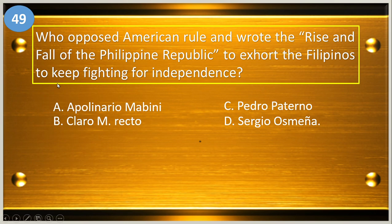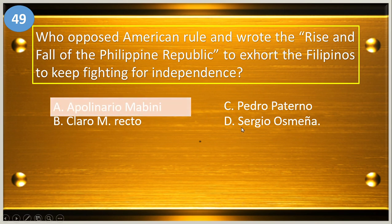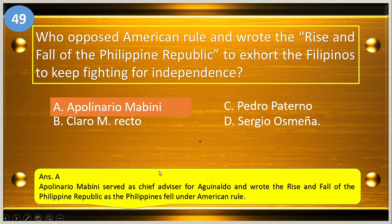Number forty-nine: who opposed American rule and wrote 'The Rise and Fall of the Philippine Republic' to exhort the Filipinos to keep fighting for independence? A, Apollinario Mabini; B, Claro M. Recto; C, Pedro Paterno; and D, Sergio Osmeña. The answer is Apollinario Mabini.